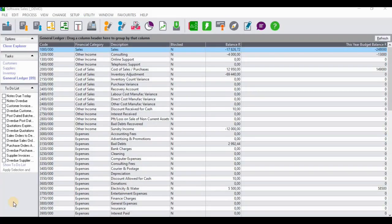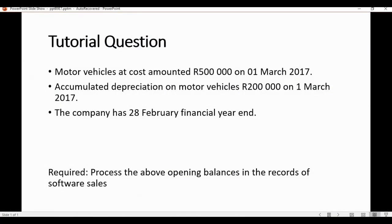Hello guys and welcome to today's tutorial video. In this tutorial I'm going to demonstrate how to process accumulated depreciation and motor vehicles at cost as opening balances. The tutorial question states: motor vehicles at cost amounted to five hundred thousand on 1 March 2017, and accumulated depreciation on motor vehicles amounted to two hundred thousand on 1 March 2017. The company has a 28 February financial year end. The requirement is to process the above opening balances in the records of software sales.